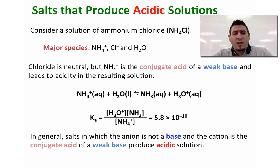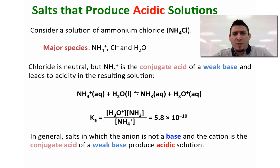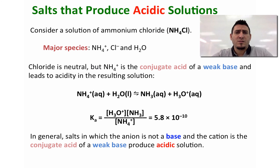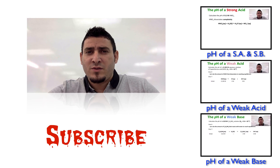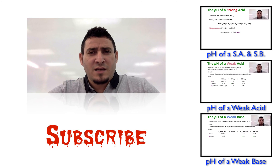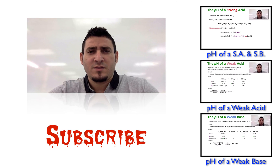So in general, salts in which the anion is not a base and the cation is the conjugate acid of a weak base will produce an acidic solution. I hope this video was helpful to you, so please like, share, and subscribe, and I will see you next time!